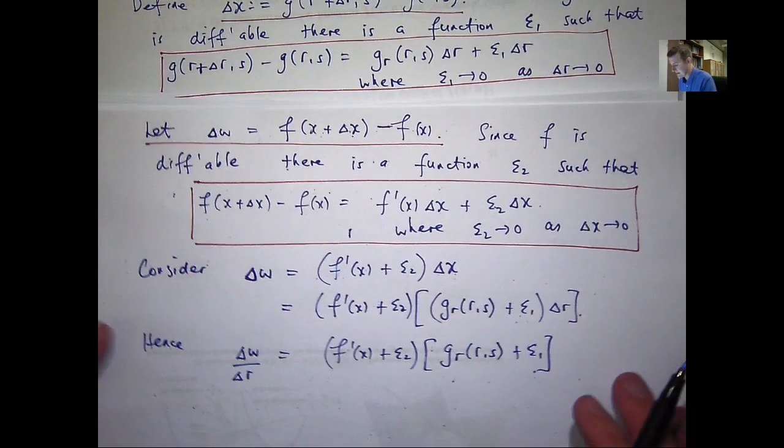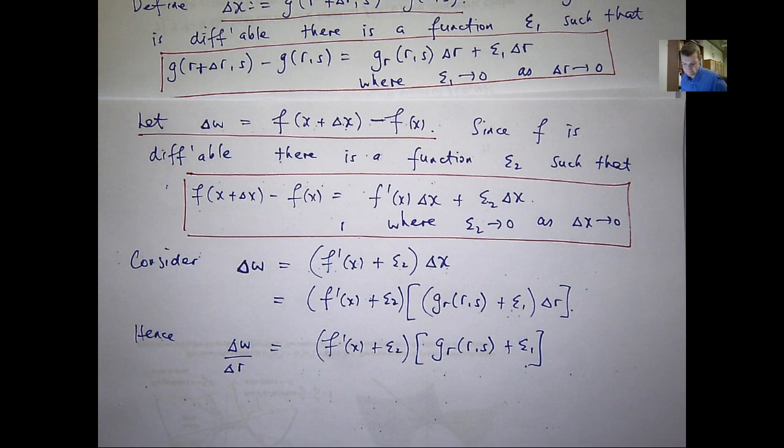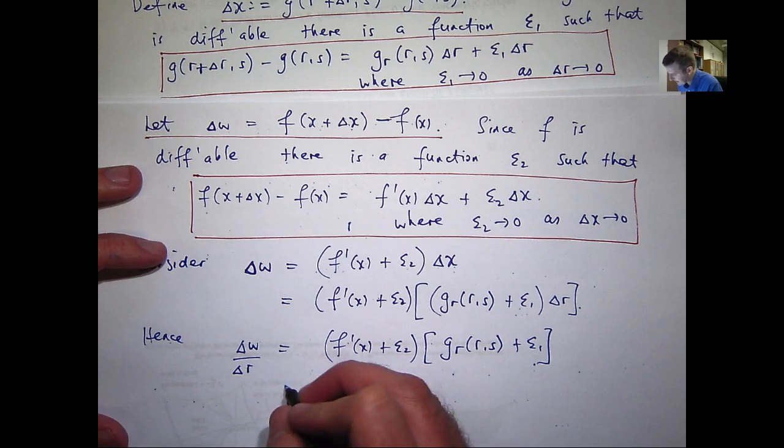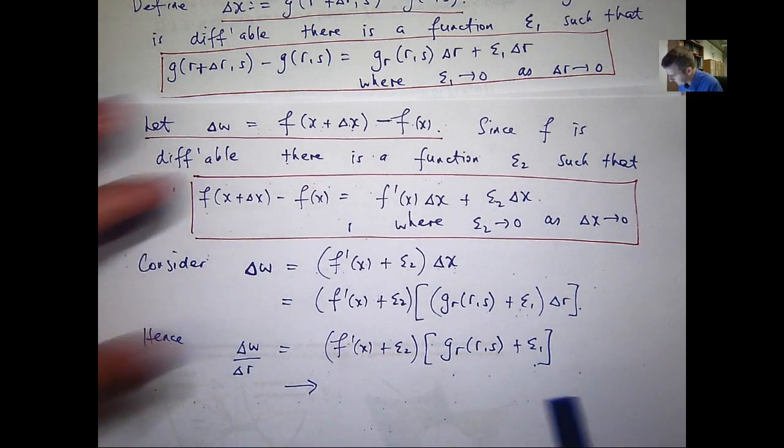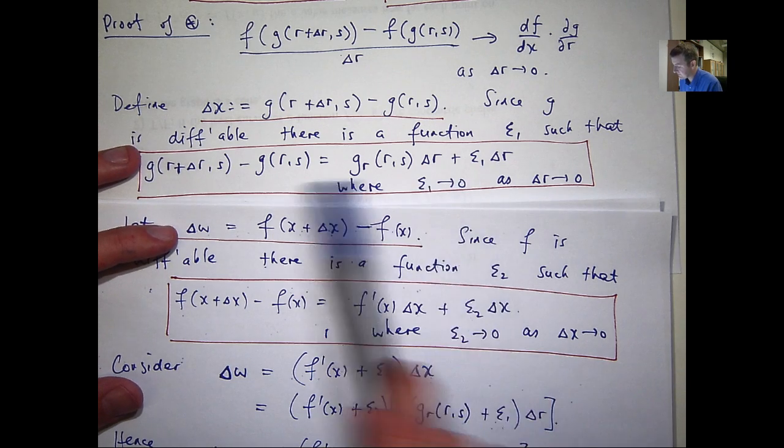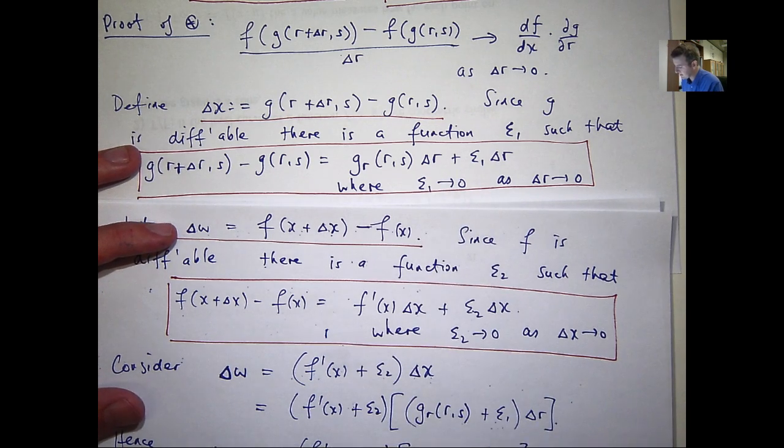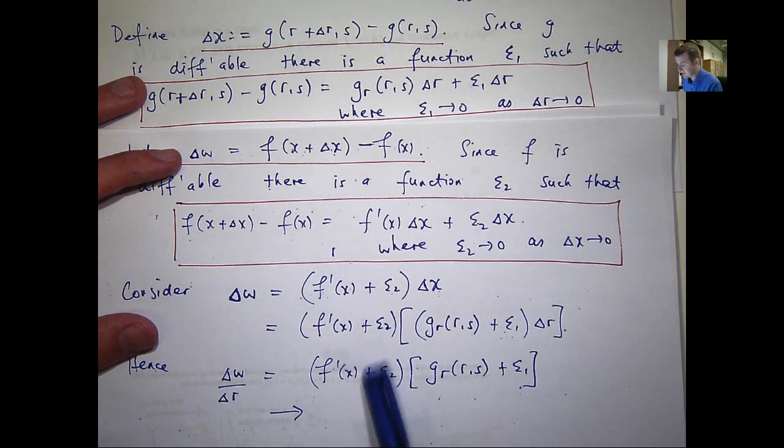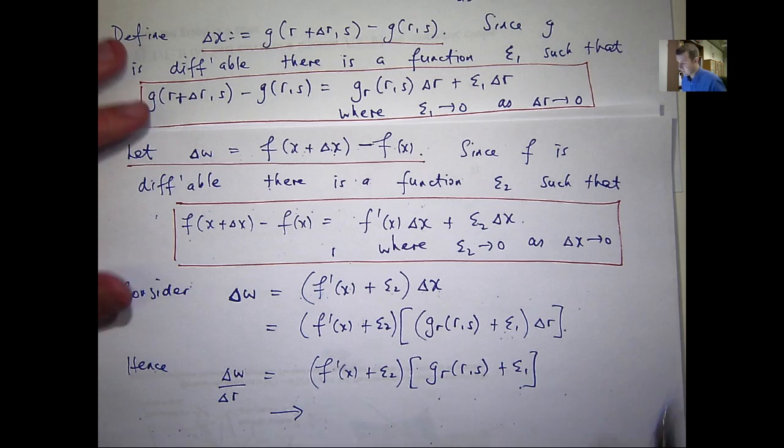So, now, hopefully what you can see is that as delta r goes to zero, well, from the differentiability of g, epsilon 1 has got to go to zero. So, that term is going to disappear. What about this term? Well, the epsilon 1 is going to disappear.